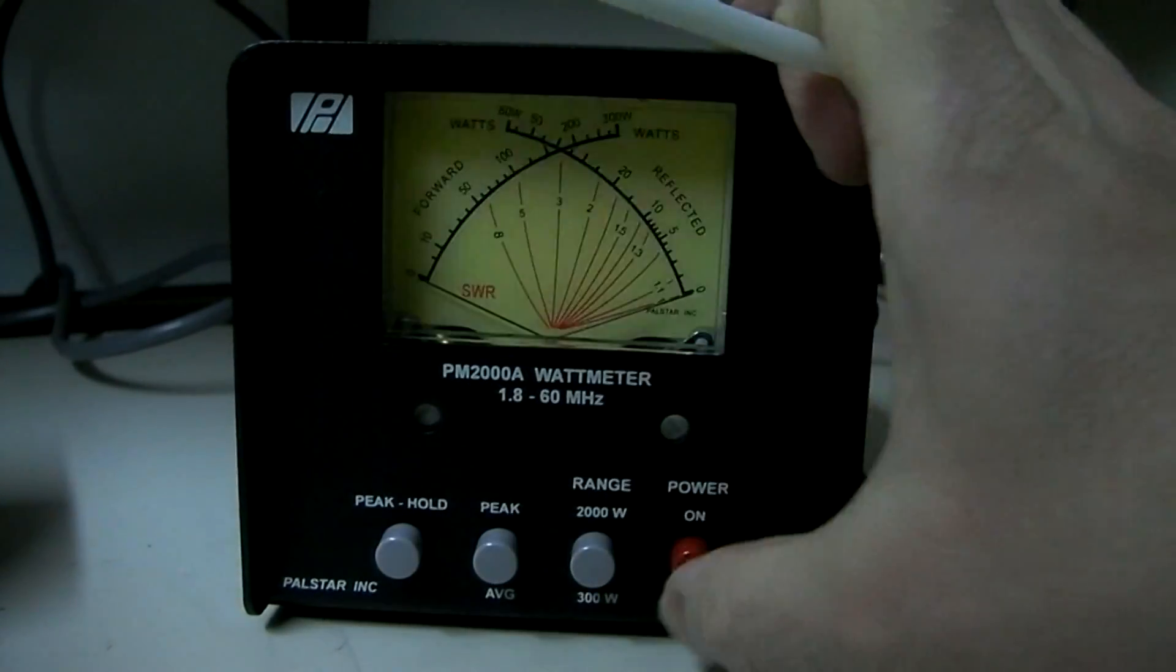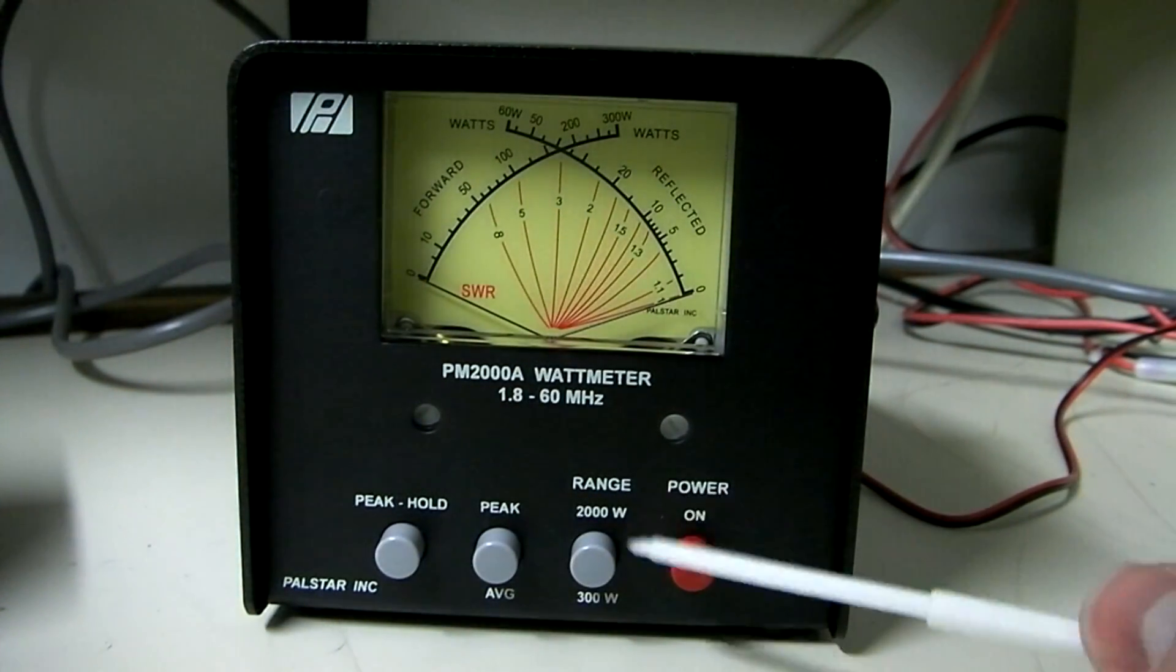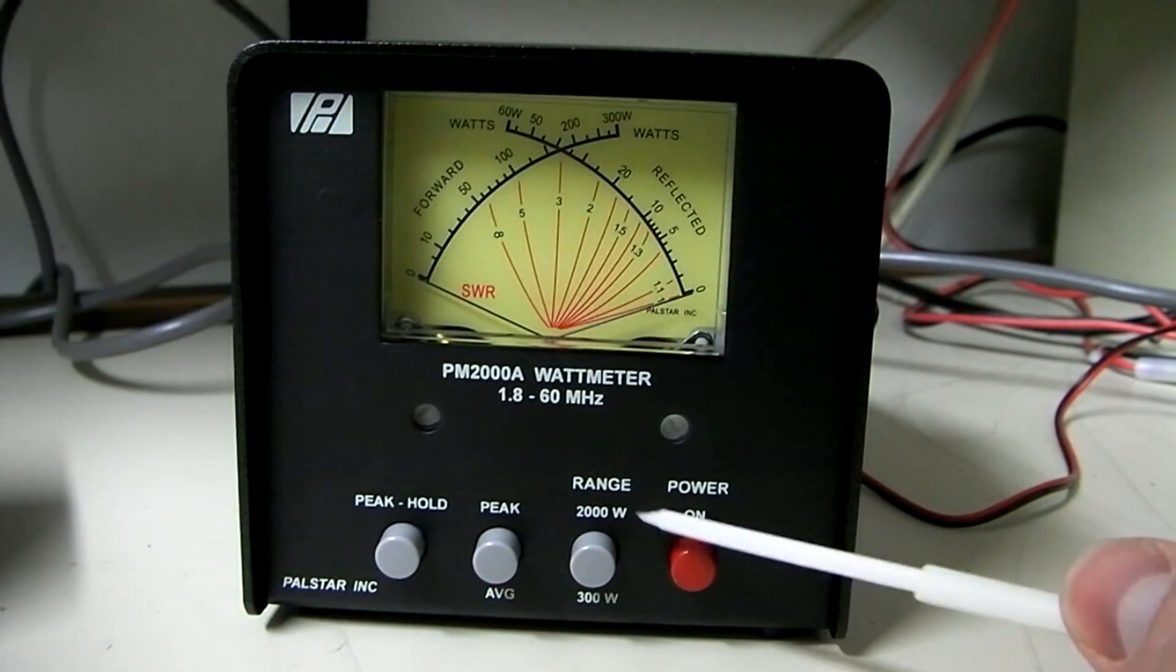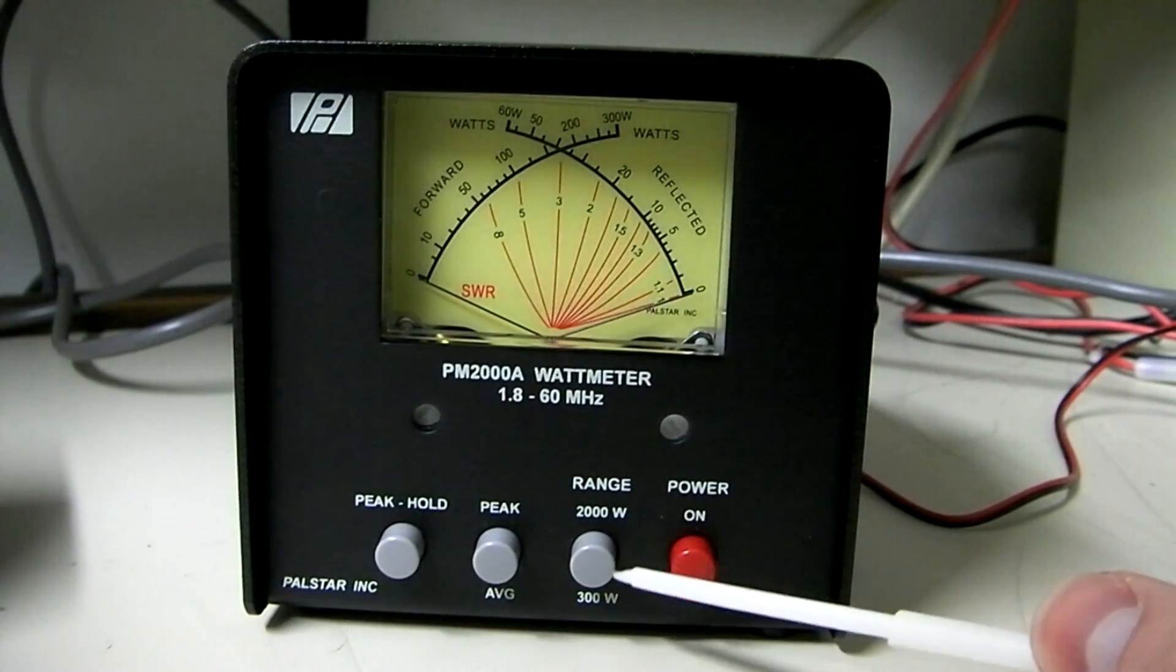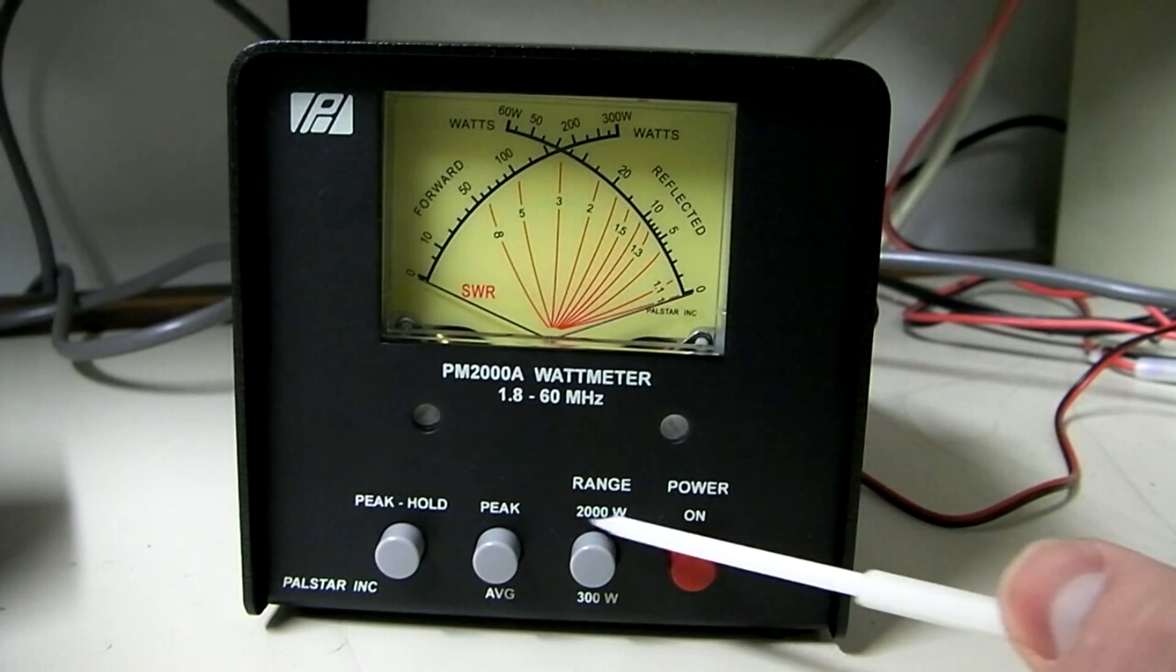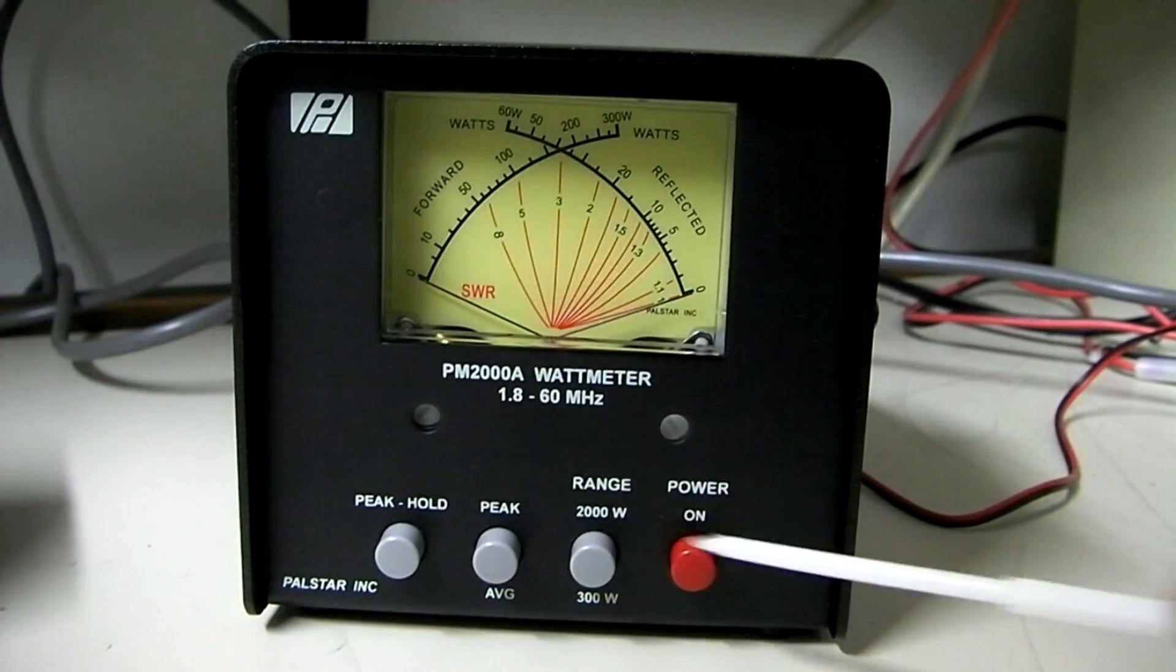I mean, it's fairly user-friendly to be able to figure it out, but still, I would have liked to have seen the actual little graphic next to it where it shows if the button's out, then it's 300 watt, and if it's in, it's 2,000 watt. It makes it a little bit easier.